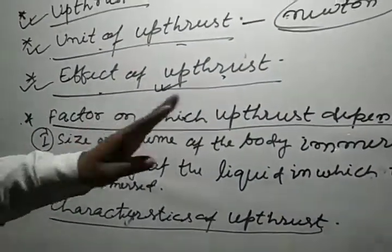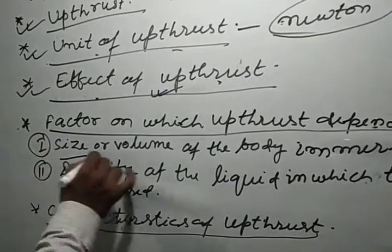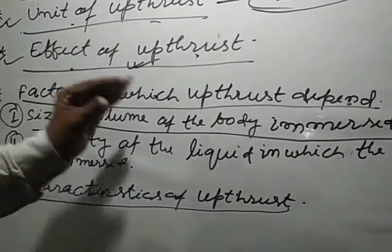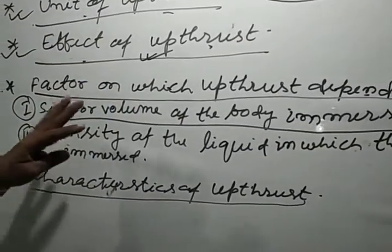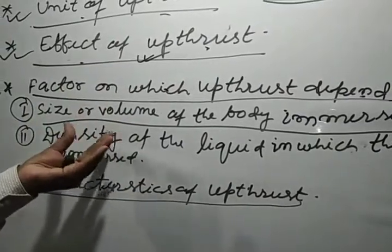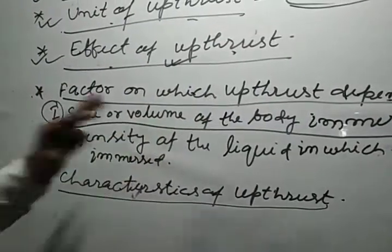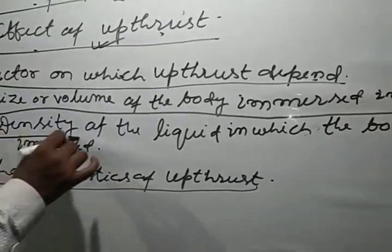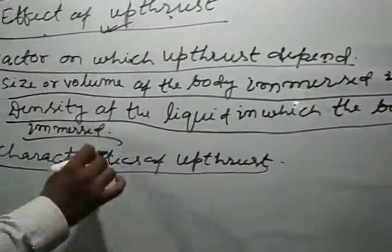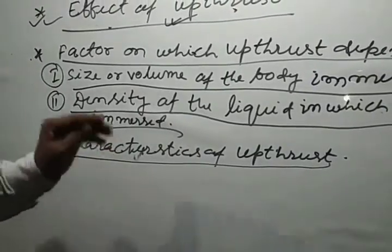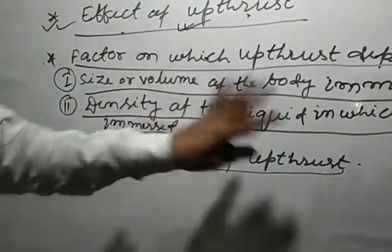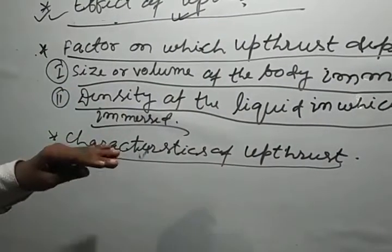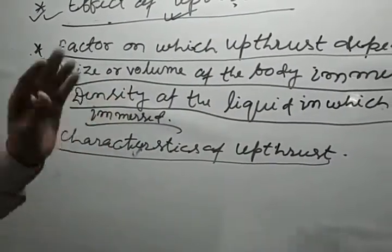What are the factors on which upthrust depends? The 1st factor is the size or volume of the body immersed in the liquid — when we immerse more volume of a body in a liquid, then it experiences more upthrust. The 2nd factor is the density of the liquid in which the body is immersed — liquids with lesser density produce lesser upthrust.